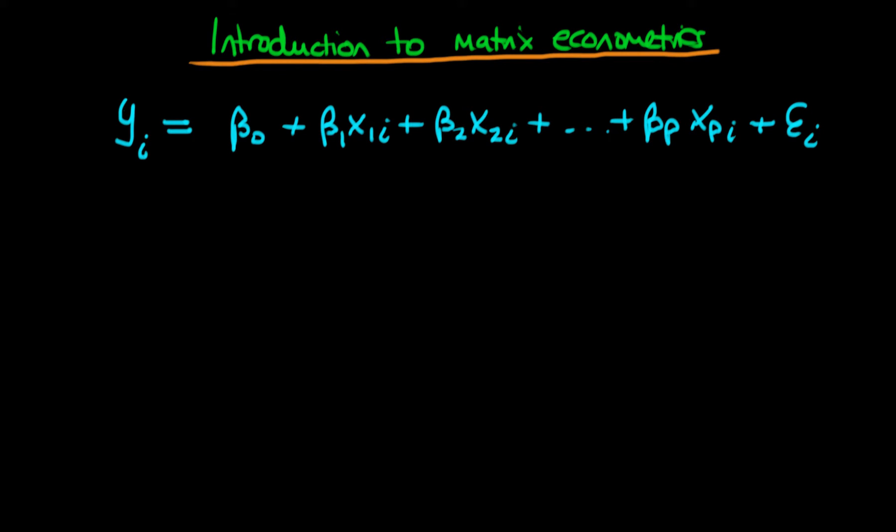This is quite a clunky way of writing things down. If I've got p independent variables, I have to write down p expressions, and include on each term a subscript i, where i goes from 1 through to the last point in our sample. Ideally we would like a more compact and neater way of writing things down. It turns out that the matrix formulation of econometrics is a neat way of doing this.